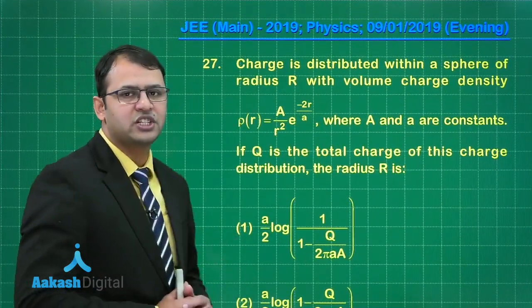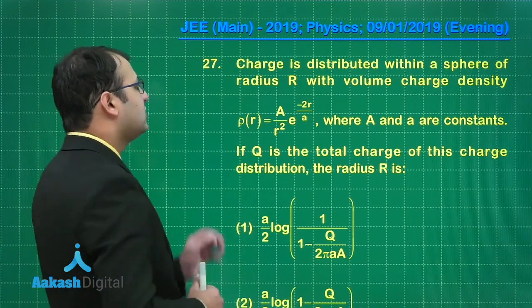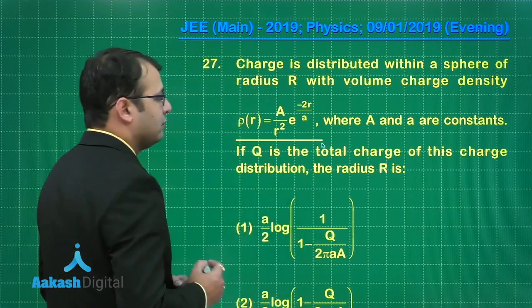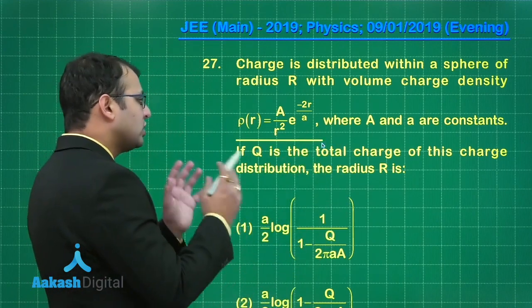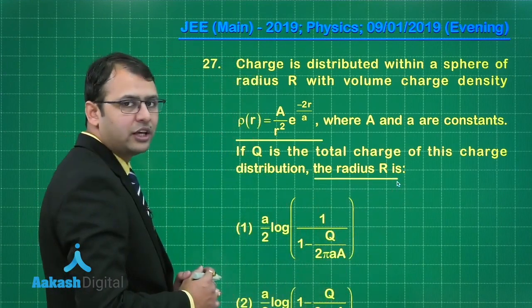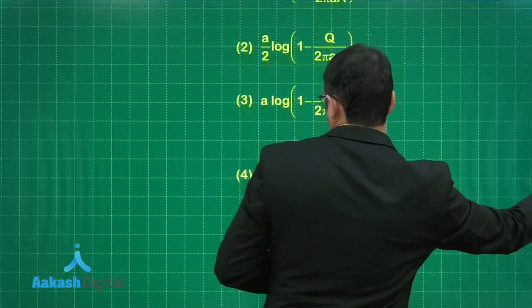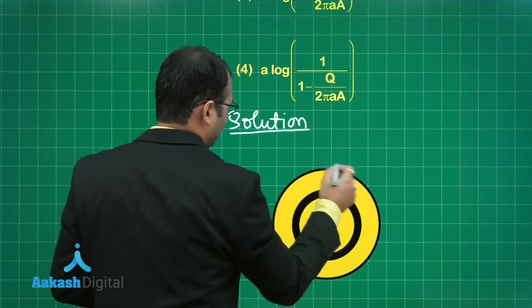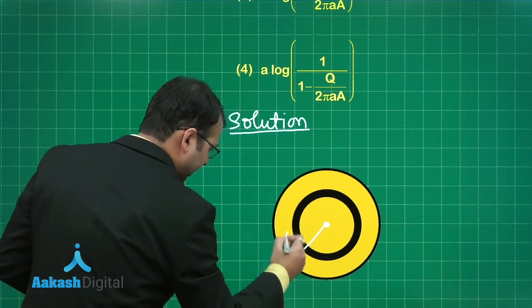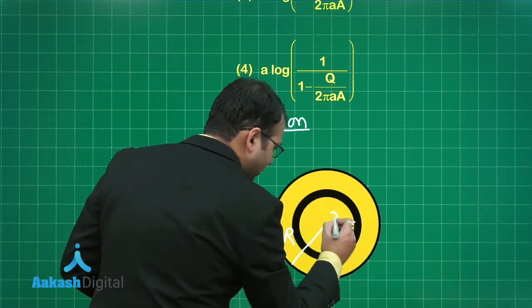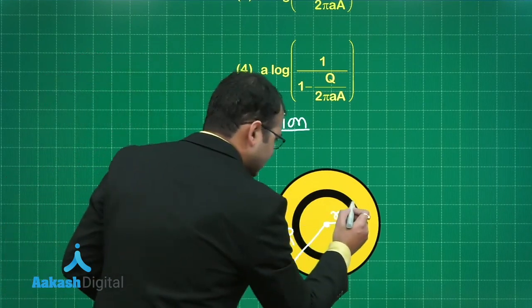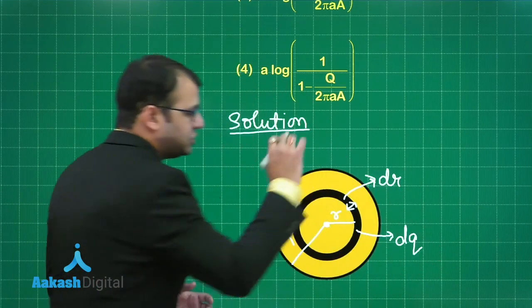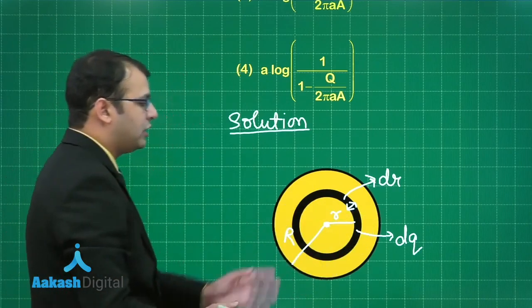Let's move ahead to question number 27, which belongs to the section on electromagnetism — specifically electrostatics. Charge is distributed within a sphere of radius R with charge density rho = A/r² × e^(−2r/a), where capital A and small a are constants. Given the total charge is capital Q, we need to find the radius R. We draw a sphere of radius R and take a small hollow spherical shell of radius r and thickness dr inside it.